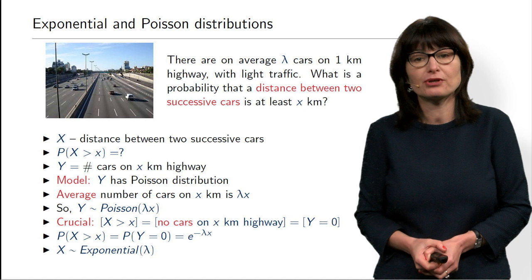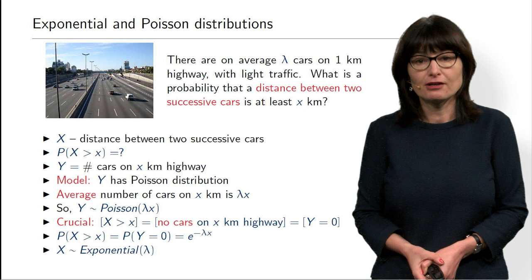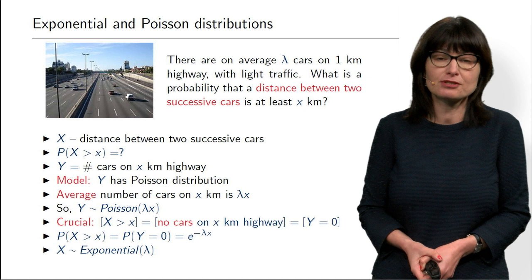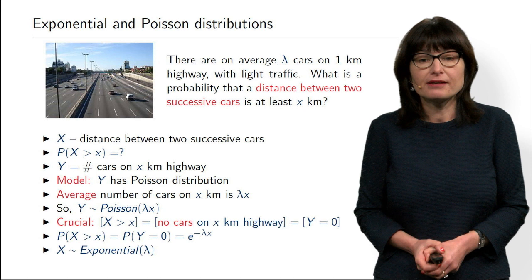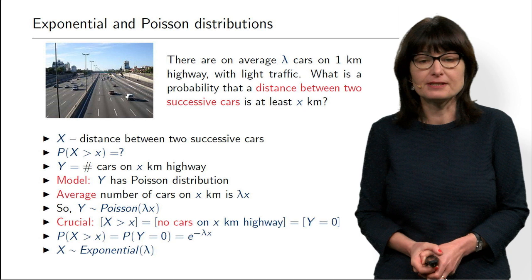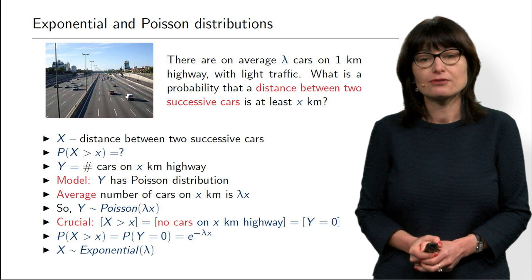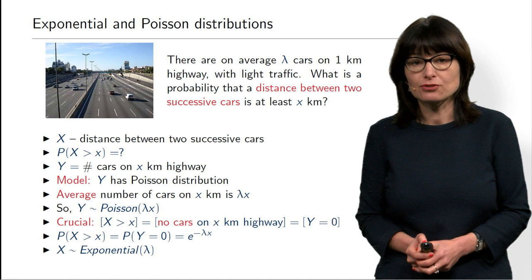This is very natural. For example, if lambda is 3 — on average 3 cars per kilometer — then the average distance between two cars is 1/λ = 1/3 of a kilometer, which makes perfect sense. This connection gives you much more than just averages: you can compute the probability that some piece of highway will be empty, or the probability that there will be a certain number of cars on that piece. It is a beautiful connection between exponential and Poisson distributions that provides tools to compute these types of probabilities.